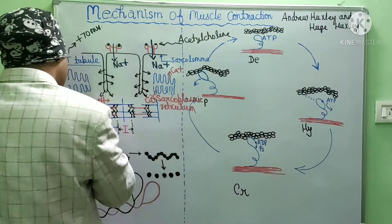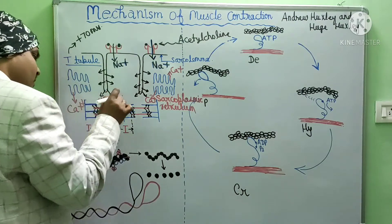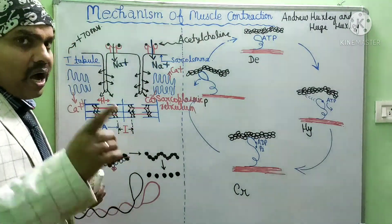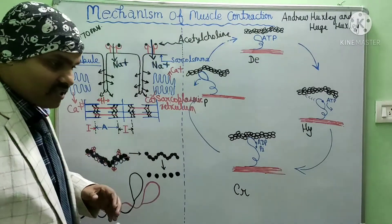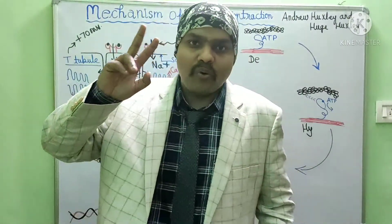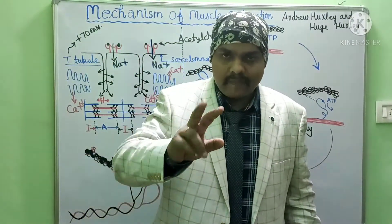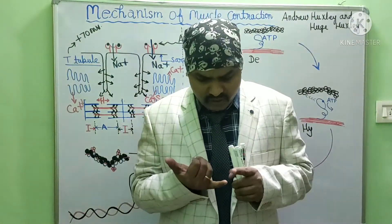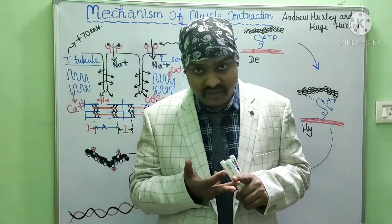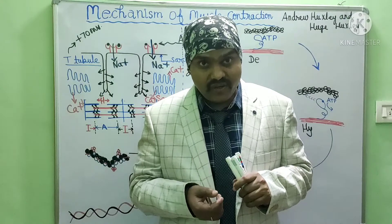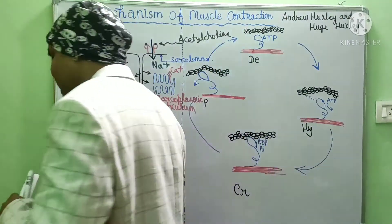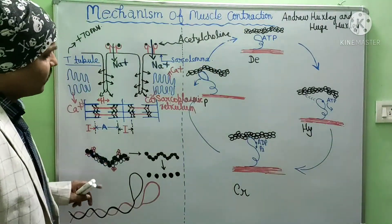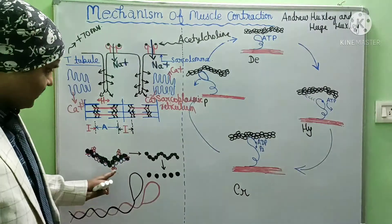Calcium ions will release into the sarcoplasm, which is the cytoplasm of the muscle cell. These calcium ions will initiate the process of contraction. As we discussed last class, there are two contractile proteins involved in contraction: actin and myosin. This calcium ion will bind with actin — let's see the structure of actin.